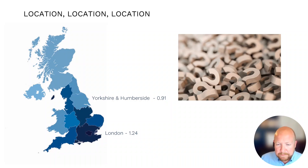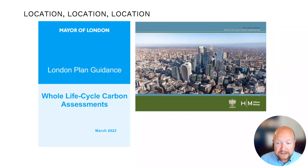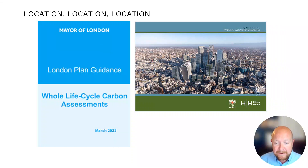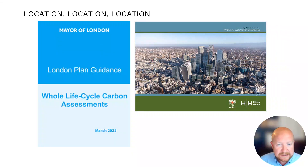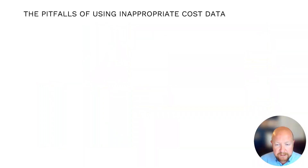Looking at the future, your project by virtue of its location could be impacted by local schemes and planning frameworks. For example, embodied carbon emissions are not regulated at national level, but the Greater London Authority with its London Plan guidance and the City of London Corporation with its strategic whole-life cycle carbon optioneering are both potentially setting a precedent for the country. What impact might something like this make on the specifications for your project, and where would you get the appropriate cost data from?